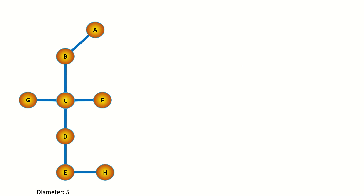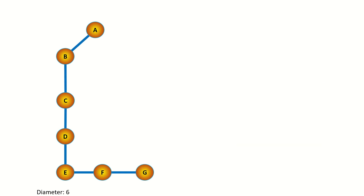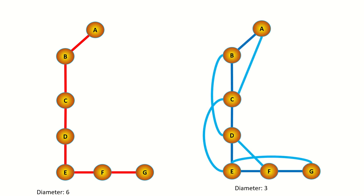Finally, taking a power of a graph decreases its diameter. Consider this graph — its diameter is 5. However, when we take its second power, the diameter is reduced to 3. I've colored the new edges resulting from the second power operation in a lighter shade of blue so you can see which edges are new. Now consider this graph — its diameter is 6. When we take its second power, the diameter is reduced to 3.